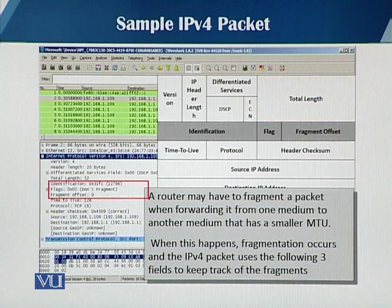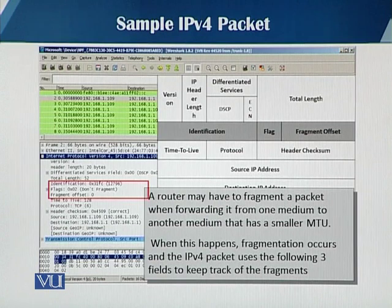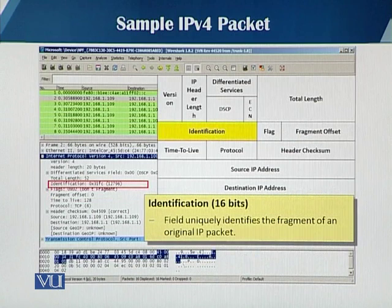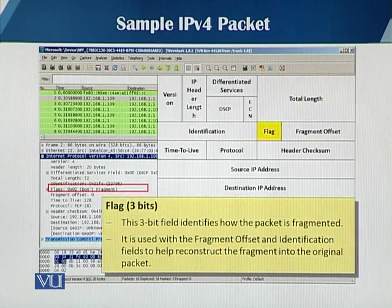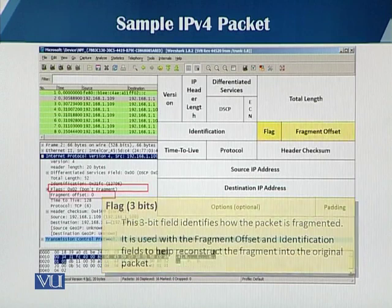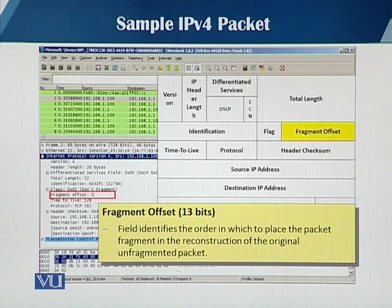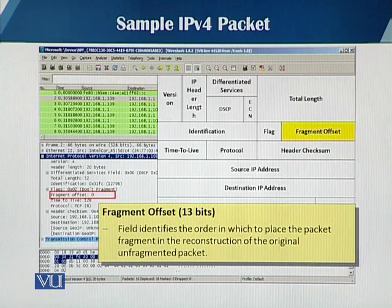The 32-bit fragmentation and reassembly section is used because a router may have to fragment a packet when forwarding it to a medium whose maximum transmission unit, or MTU, is smaller than the one it received. When this happens, fragmentation takes place. For that, you need three fields: the identification field — a 16-bit number that uniquely identifies a fragment of the original IP packet; the flag bit, which tells you whether more fragments are coming; and the fragment offset field — a 13-bit field that tells you where to place the fragment when reassembling the packet.